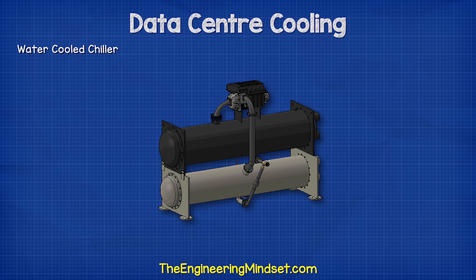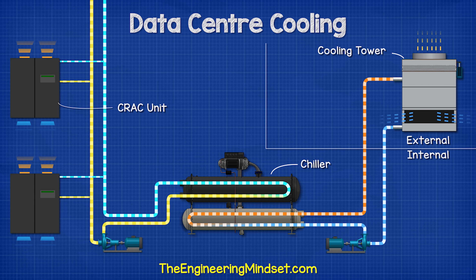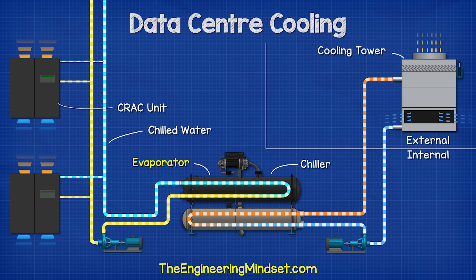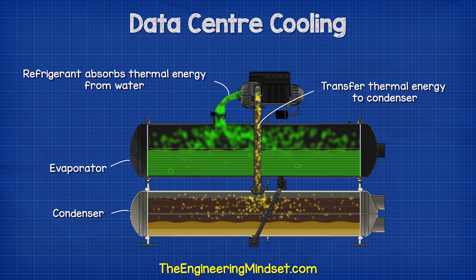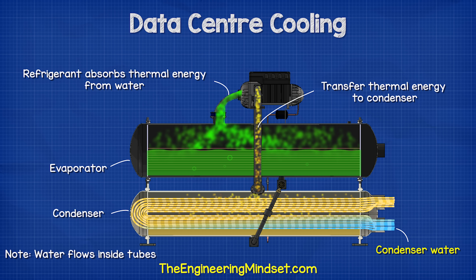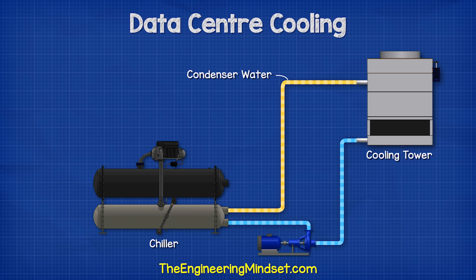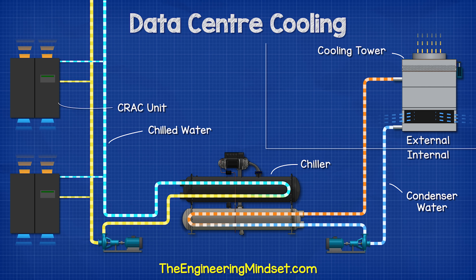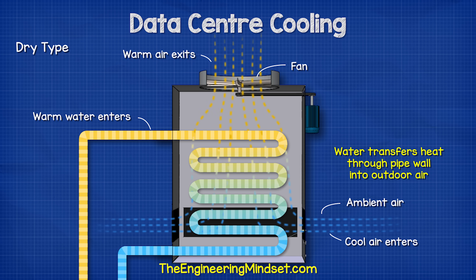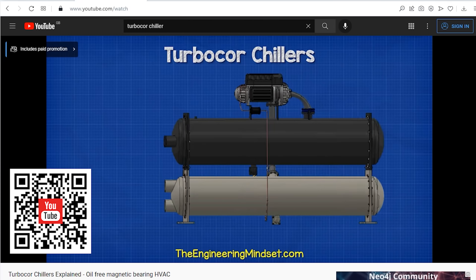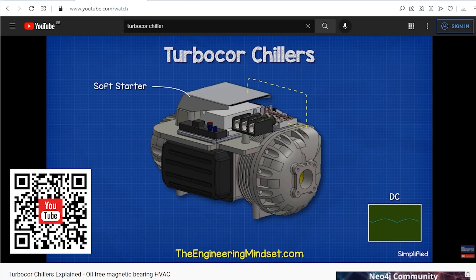With water-cooled systems, the chiller is installed internally with a cooling tower located externally. The chiller sends chilled water to the CRAC unit to collect the unwanted heat, and then returns this to the chiller's evaporator. A refrigerant inside the evaporator collects this heat and transfers it to the condenser. Another stream of water flowing in the condenser, known as the condenser water, absorbs the thermal energy and sends it to the cooling tower, where the water is usually sprayed into a stream of ambient air to remove the heat and cool the water down. The water then returns to the condenser, ready to collect more thermal energy. We can also get dry cooling towers, which are less efficient — the condenser water simply flows through a heat exchanger with air blown over it to remove the heat instead of being sprayed into the airstream. We have covered how chillers work in great detail previously, with links in the video description down below.